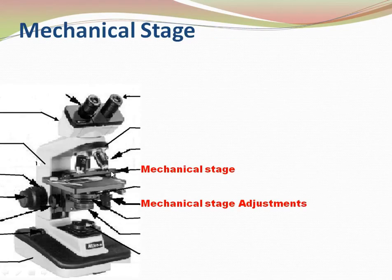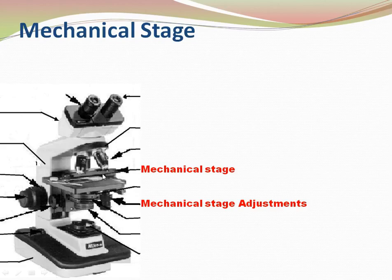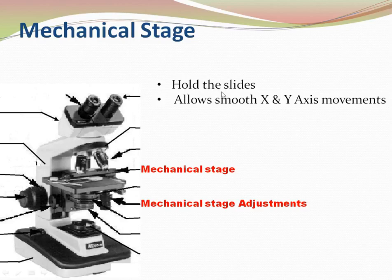The mechanical stage is located just above the stationary stage, which holds the specimen. The mechanical stage allows easy changing of the field of vision. The adjustment screws for the mechanical stage allow smooth X and Y axis movement in two dimensions. Its function is to hold the slide and allow smooth X and Y axis movements.